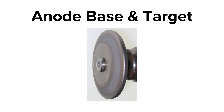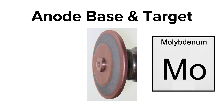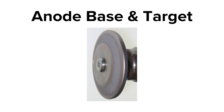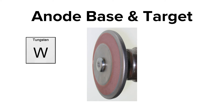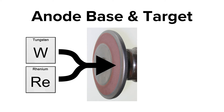Heat dissipation is the major engineering hurdle in designing tubes. The anode itself is comprised of two parts: the base and the target. The base is made out of molybdenum, which has a lower mass density than tungsten, making the anode overall lighter and easier to rotate. The target is the actual tungsten, which is a mixture of tungsten and rhenium, providing mechanical strength during rotation.